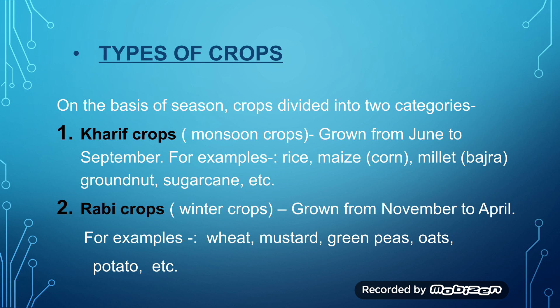Second is Rabi crops. Rabi crops are also called winter crops because they are planted in the winter season, in the month of November, and harvested in April. Examples include wheat, mustard, green peas, oats, potato, etc. These crops grow in different seasons because each crop requires different climate conditions. Some can grow in winter, some only in summer. Some crops need a lot of water to grow, and some can grow with very little water. Accordingly, farmers grow those crops in the right season. So basically we have two types: Kharif crops grow in the monsoon season and Rabi crops grow in winter.